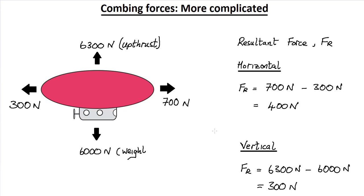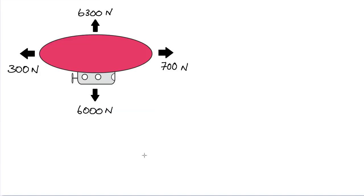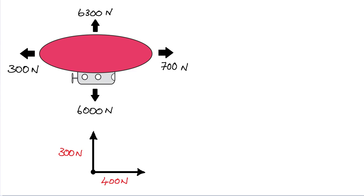To find the overall resultant force, we need to combine the horizontal resultant force with the vertical resultant force. To do that, we represent the airship by a single point — the centre of mass — with the resultant force of 300 newtons acting upwards in the vertical direction and a resultant force of 400 newtons acting to the right in the horizontal direction. We need to represent those forces on a grid diagram.